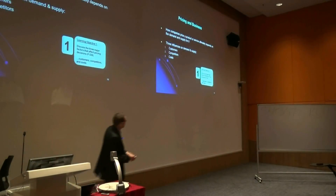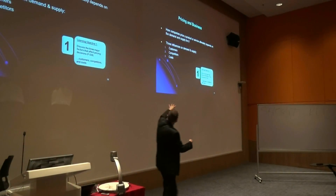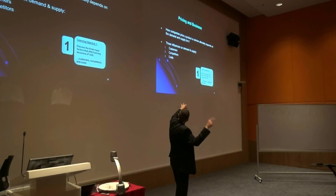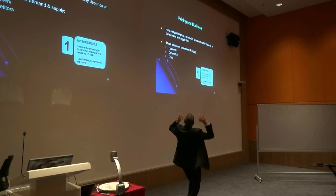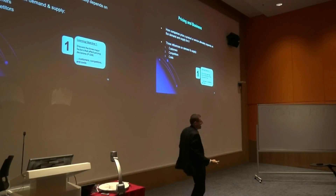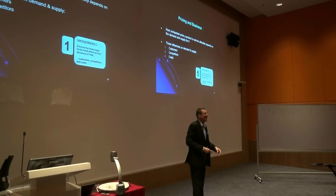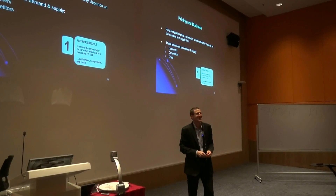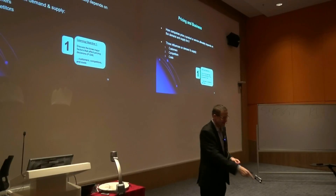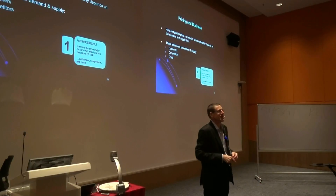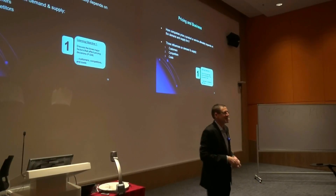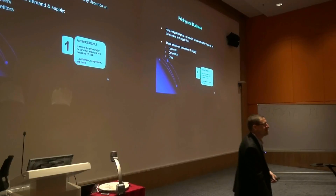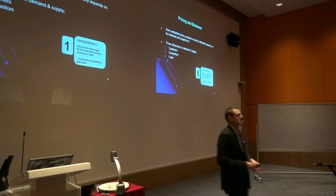Horngren tells us there are three influences on demand and supply: customers, competitors, and costs. I don't just believe what textbooks say — textbooks say a lot of rubbish sometimes.